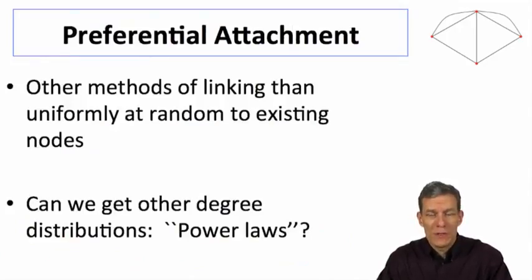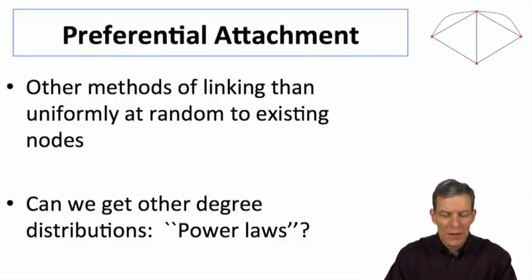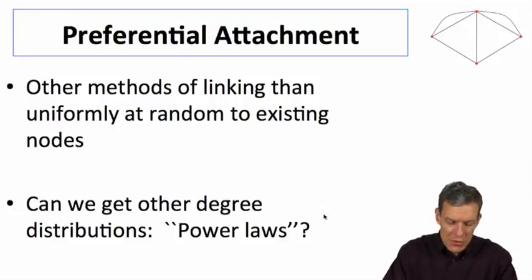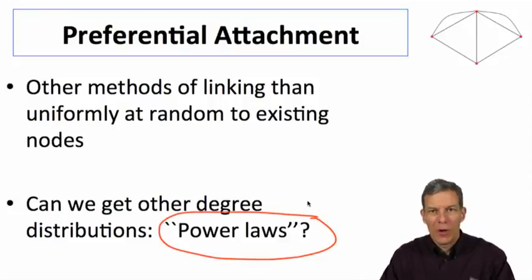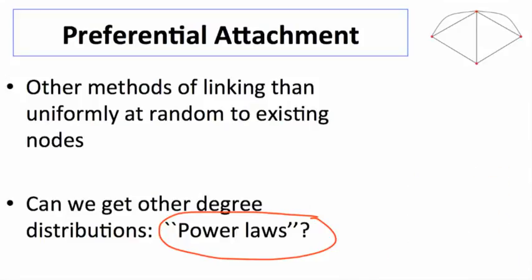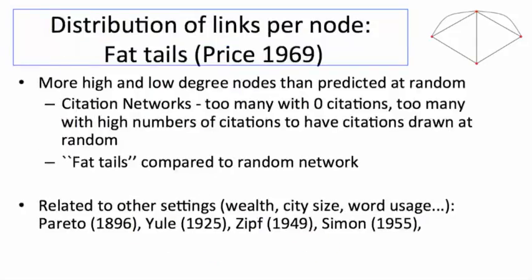Preferential attachment is one of the most well-known of these alternative methods of forming new links in one of these growing systems. This is different than just forming links uniformly at random. In particular, it's going to help us get things like other degree distributions, such as a power law where we have these fatter tails, more degrees that have extremely high and extremely low numbers of links.